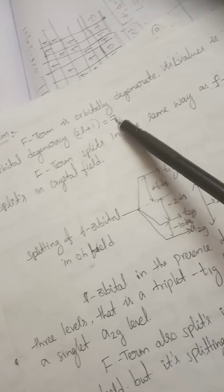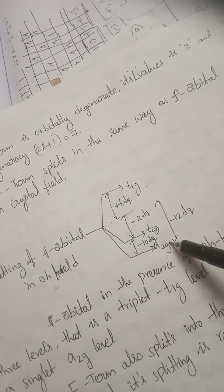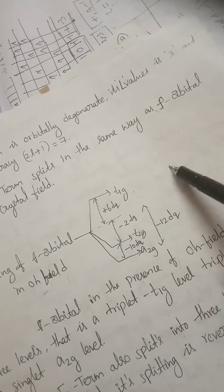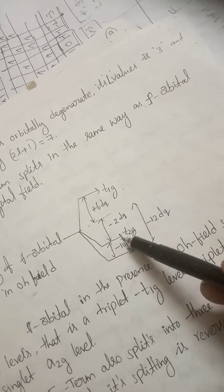We can draw Orgel diagrams from this. For the F term: the F term is orbitally degenerate with L equal to 3, and the small L value of the F orbital is also 3. The degeneracy is 2(3)+1 = 7. The F term splits in the same way as the F orbital splits in the crystal field. In an octahedral field, the F orbital splits into A1g, A2g, T2g, and T1g — giving 1+1+3+3 = 7 levels total. Regarding the energy gaps, we focus only on the splittings: A2g, T2g, and T1g for the F orbital in octahedral field, splitting into three levels.